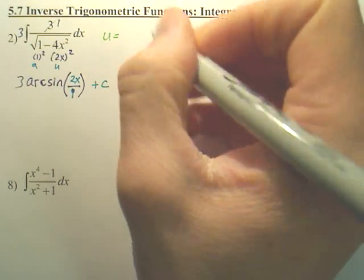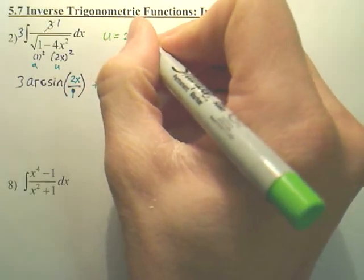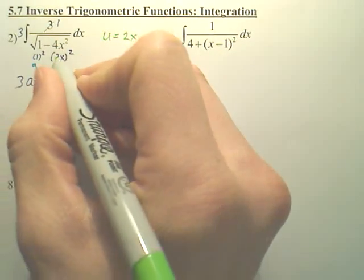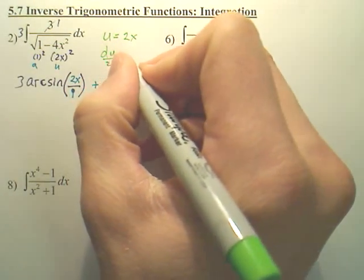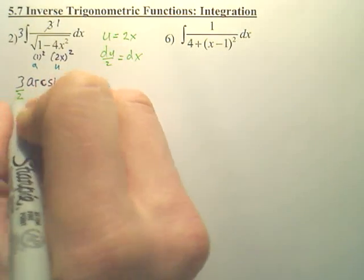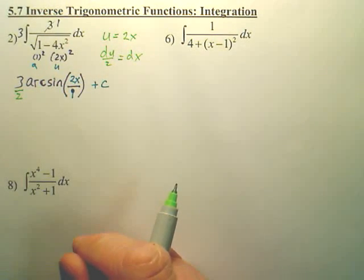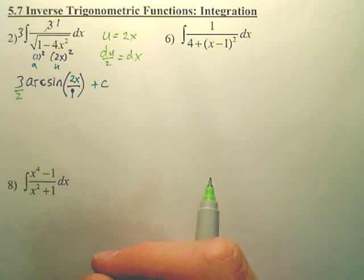u equals what? u actually equals 2x, right? So watch what's going to happen here. Isn't du over 2 going to be dx? Isn't there going to be a 2 right there? You see it? See how easy that is to mess up? Which I did until I looked at my notes right in the second of doing this. I realized I made that mistake.